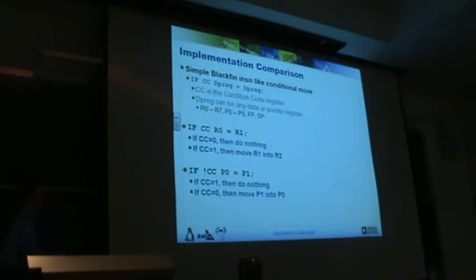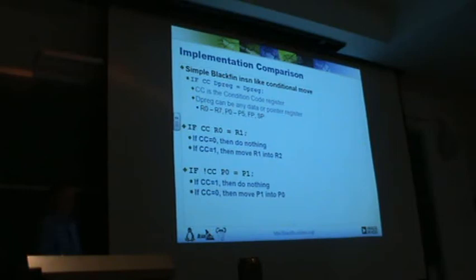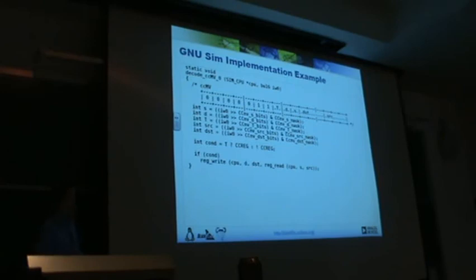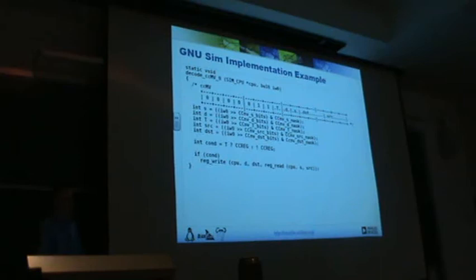To give an example of how the two different simulators compare — if we take a simple Blackfin instruction like conditional move, which based on a condition code will do a move or not — you can see that the first chunk basically first decodes the instruction, and then once you have all the information about it, you modify the state directly. So first you look up the condition code register, figure out whether you need to invert the logic, and then based on that condition, do the actual register read and move.